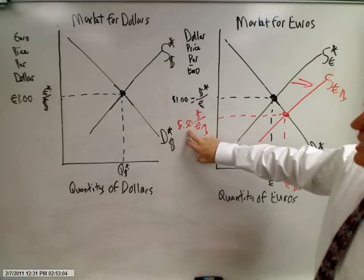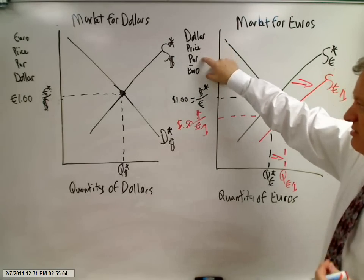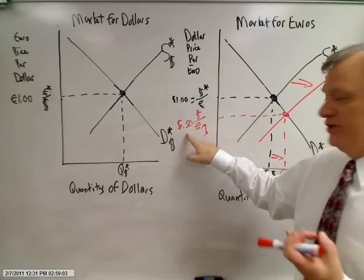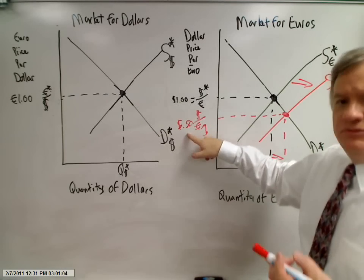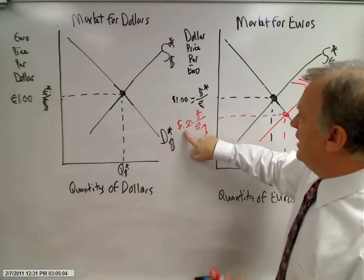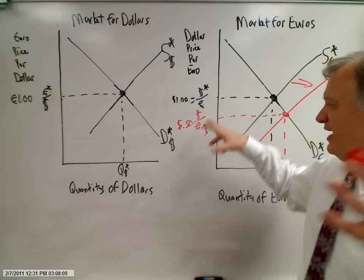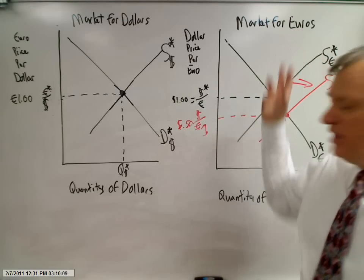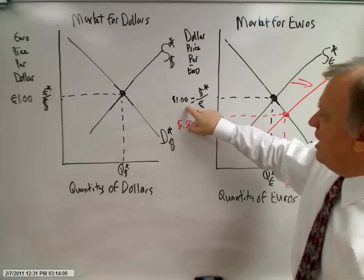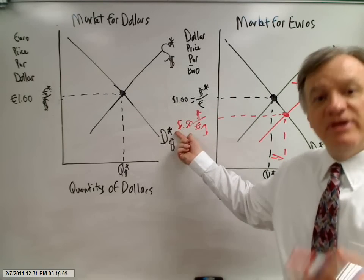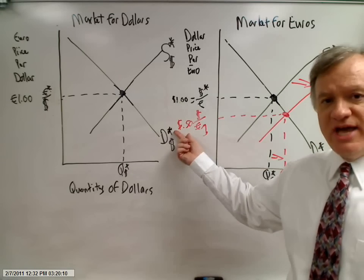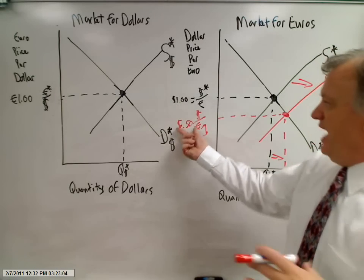Something less than a dollar — an easy number would be 50 cents. So now what this is saying is: how many dollars does it take to buy a euro? It was one dollar, but now it's only 50 cents. Is it a good deal or a bad deal? Well, it depends on which side of the fence you're standing on. If I want to go to Europe on vacation, instead of giving up a dollar to buy a euro, now I only have to give up 50 cents. Good deal, right? The euro is on sale — it's priced less than it was before.